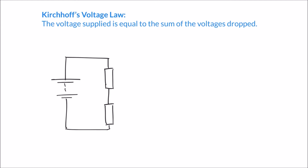Hello and welcome to this video on Kirchhoff's voltage law. We're going to look in a little bit more detail at how voltages behave in simple circuits. In a previous video we looked briefly at how voltages can be shared out amongst resistances in a circuit. Let's label some of the components in this simple circuit: I've got a battery labelled Vs, the supply voltage, and two resistors in series, R1 and R2.